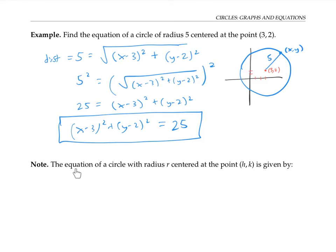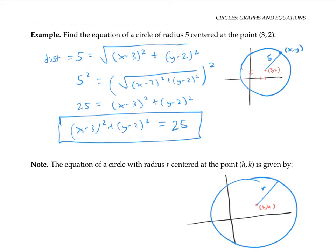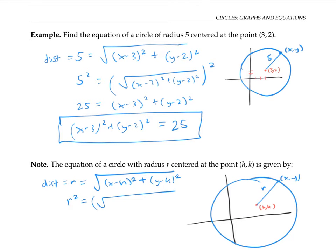The same reasoning can be generalized to find a general equation for a circle with radius r centered at a point h, k. For any point x, y on the circle, the distance between x, y and the point h, k is equal to the radius r. By the distance formula, that's the square root of x minus h squared plus y minus k squared equals r. Squaring both sides, we get r squared equals x minus h squared plus y minus k squared.